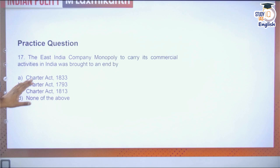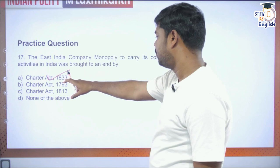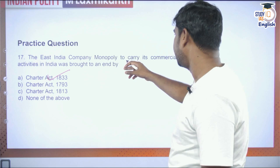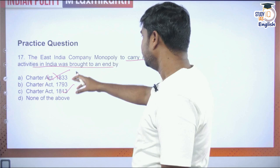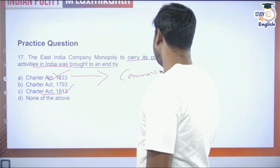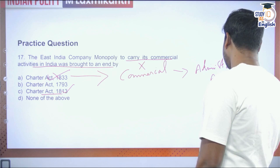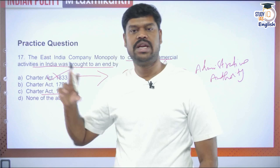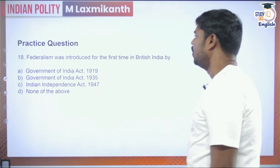Question 17: The East India Company's monopoly to carry out commercial activities in India was brought to an end by which act? A small correction is needed: the monopoly over trade with India was brought to an end by the Charter Act of 1813, while the commercial activities entirely were ended by the Charter Act of 1833 — after which the Company became a purely administrative authority. The Charter Act of 1813 still allowed them monopoly over trade with tea in India and trade with China.